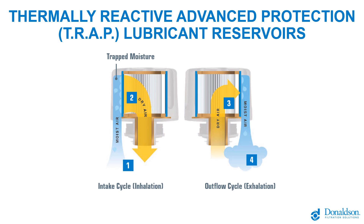As the fluid comes back to tank and pushes the air back out of the reservoir, that air moves through the TRAP breather and actually regenerates it, pushing the moisture and particulate back out of the breather itself.